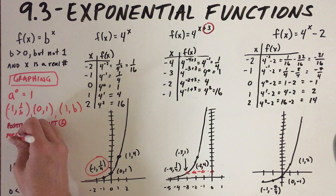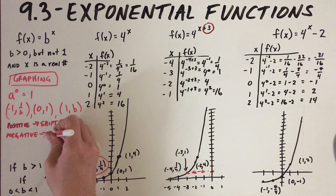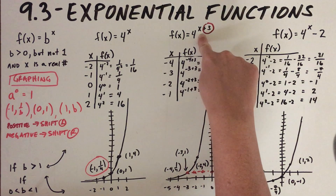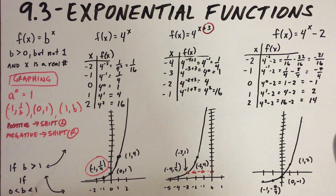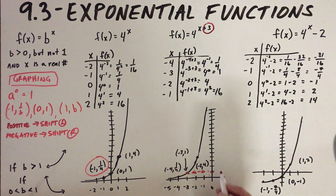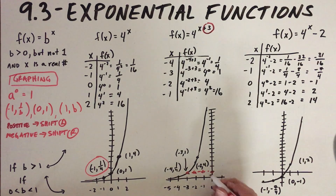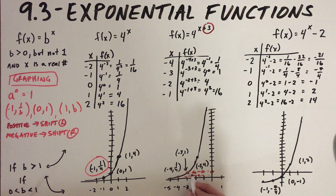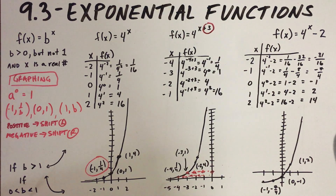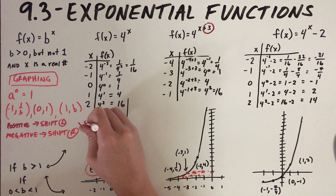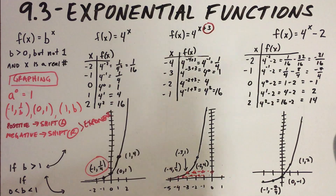A positive in the exponent shifts the entire graph left, and a negative in the exponent shifts the entire graph right by that number of units. For instance, if I had 4 raised to (x − 2), I would have this exact graph but every point shifted two units to the right. And again, in this example every point shifted three units to the left. Remember, these shifts work the same way as with parabolas — when the number is in the exponent, it shifts right or left.